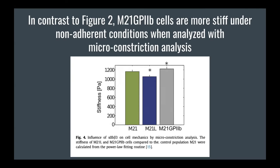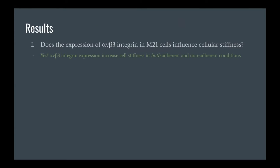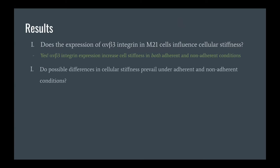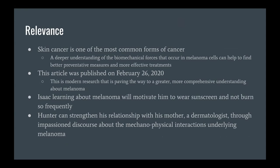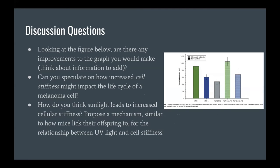Looking at the overall results: the expression of the alpha v beta 3 integrin in these melanoma cells influences stiffness in either condition. Fibronectin does influence overall stiffness; however, varying the concentration alone does not, because other proteins are also at play. The relevance includes the prevalence of skin cancer and the recency of this article, published in February 2026.